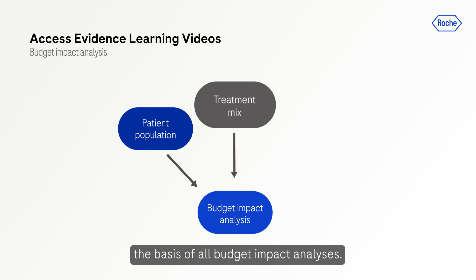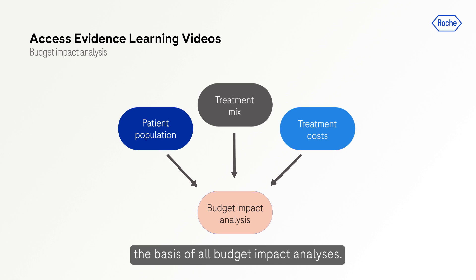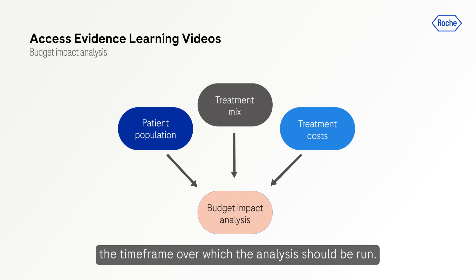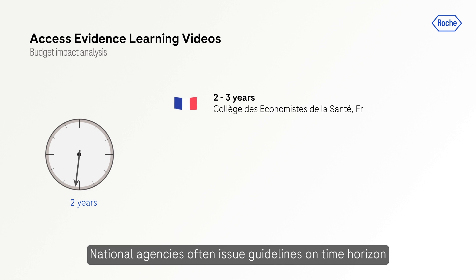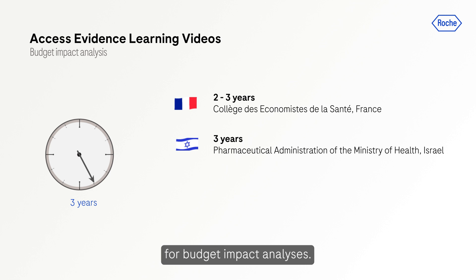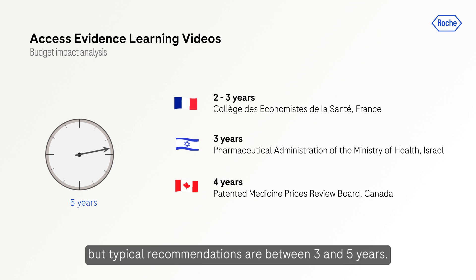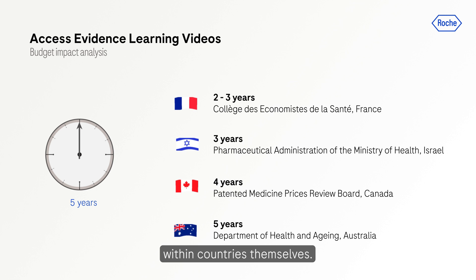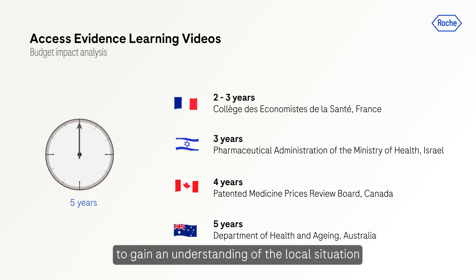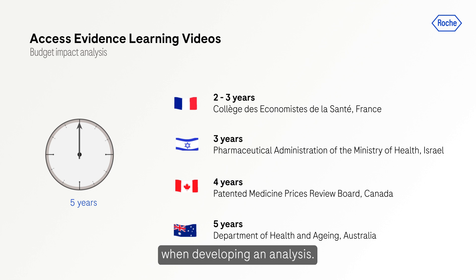These three key elements will form the basis of all budget impact analyses. However, there are other factors that will require consideration. For example, the time frame over which the analysis should be run. The key factor that should determine the time horizon is the time frame over which the intended audience plans their budget. National agencies often issue guidelines on time horizons for budget impact analyses; these vary from country to country, but typical recommendations are between three and five years. However, budget planning can vary considerably within countries themselves, so it is important to understand the local situation when developing an analysis.